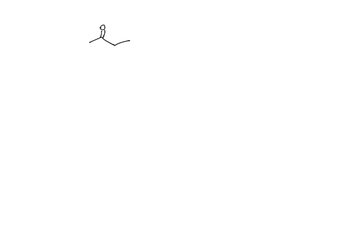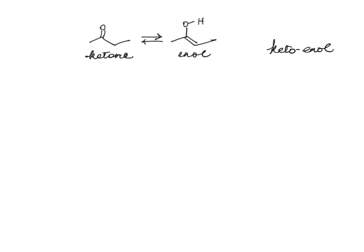I want to start this discussion with keto-enol tautomerism one more time. If you have a ketone and you can draw out its enol, we know that ketones can reorganize — they can rearrange themselves going through the 1-3 hydrogen shift as we called it back in organic one. These are both called as: this is the enol, and this is the ketone. We call the process keto-enol tautomerism.